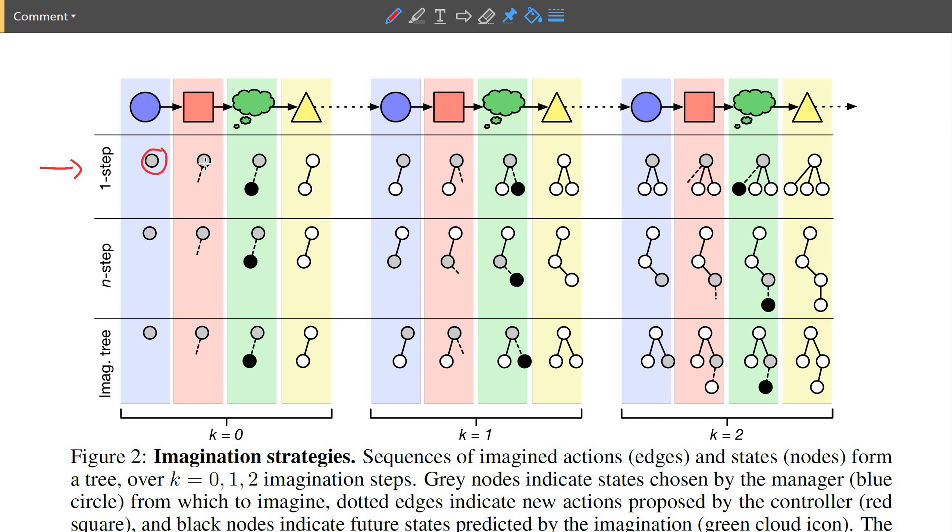And what you do is you always go from the current state of the world, imagine one step ahead. So you select the state to imagine from, you imagine one step. And if you decide to not take an action after that, but imagine again, because maybe you're not sure yet what you want to do, you would again go from this initial state.